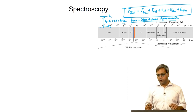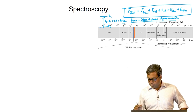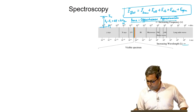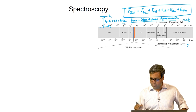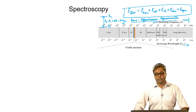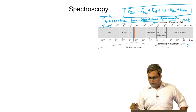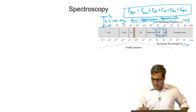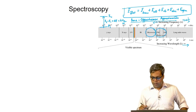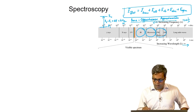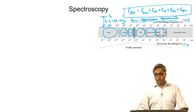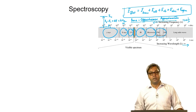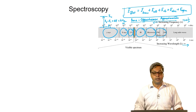In the electromagnetic spectrum, wavelength increases to the right and frequency increases to the left. The different regions are: radio waves, microwave, IR, visible, ultraviolet (UV), X-rays, and finally gamma rays. In general, we have different spectroscopies corresponding to different regions of the electromagnetic spectrum.